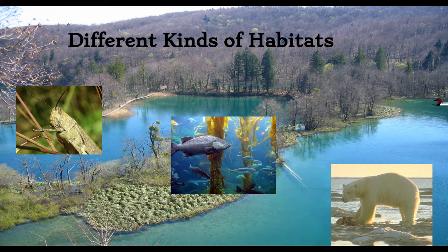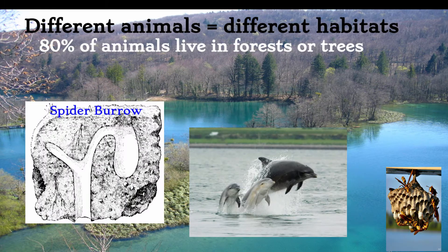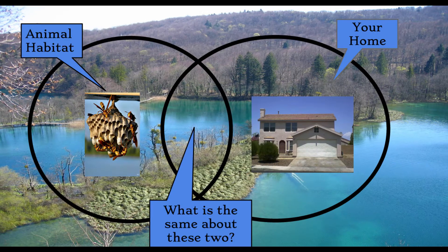There are lots of different kinds of habitats on earth — 80% of animals live in forests and trees. Animals require different amounts of space. Habitats can be as big as an ocean or a lake, or as small as a burrow. Here you can compare an animal's habitat to your home. What is the same about these two?